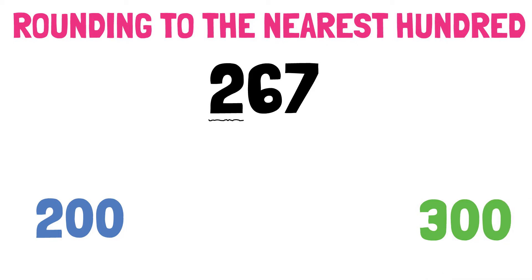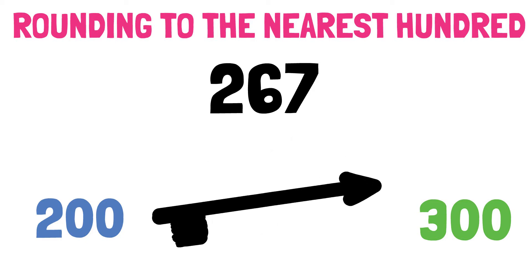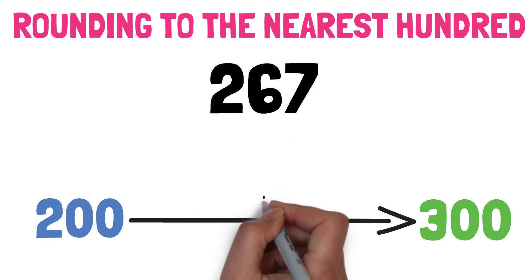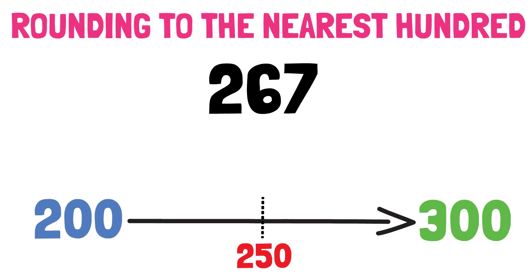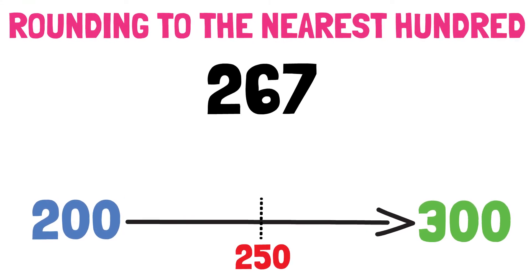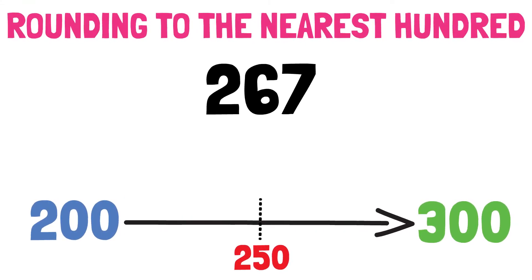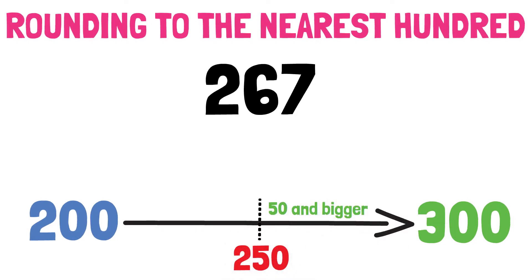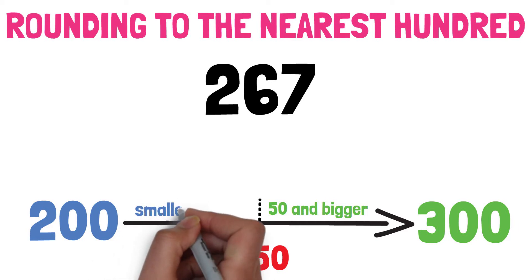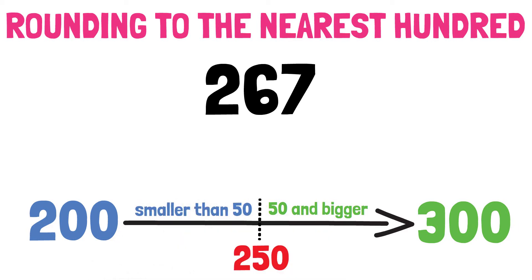What's the value in the middle? Yes, it's 250. We now have two sides. Please remember, we are rounding to the nearest hundred. So we need to look at the tens. The side on the right is where the tens digit is 50 or bigger. The side on the left is where the tens digit is smaller than 50.